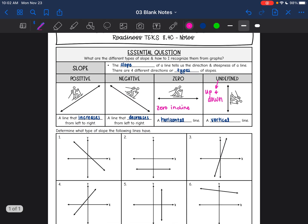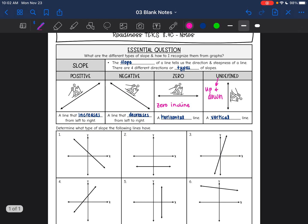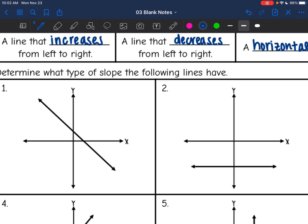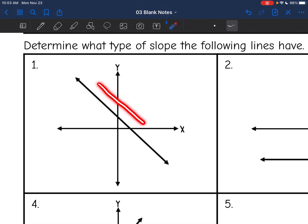Okay, so all we are going to do is identify what type of slope these following lines have. So this first line right here, we are going down. That would be a negative slope.